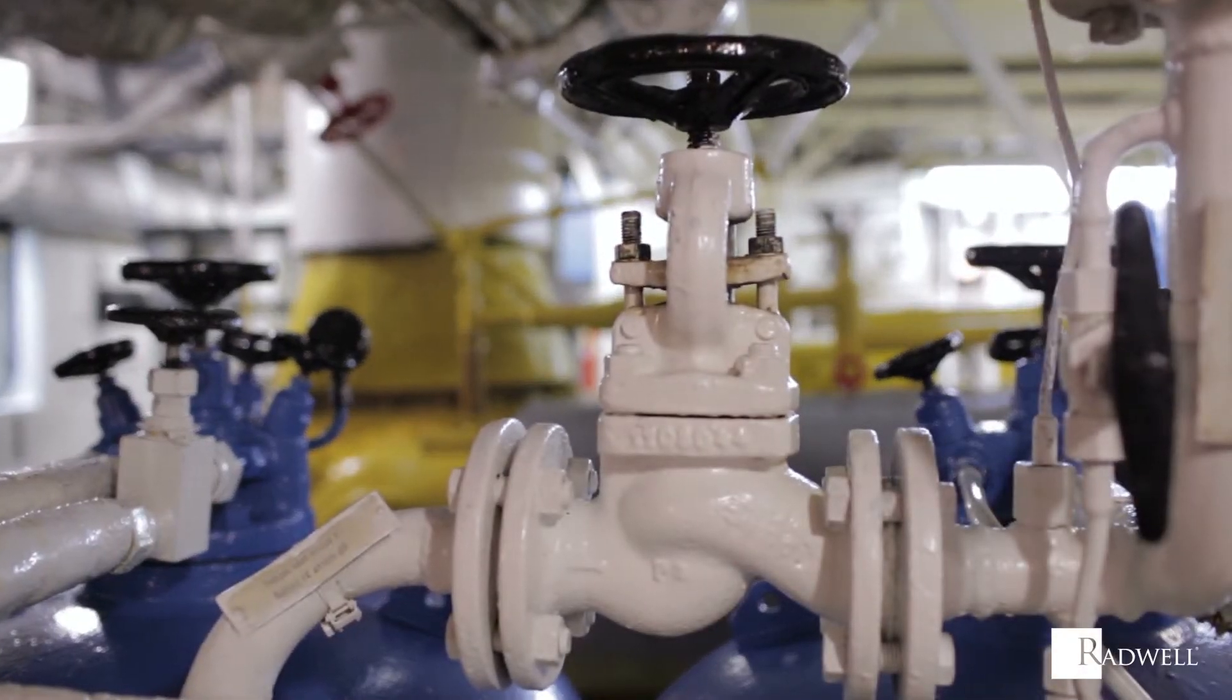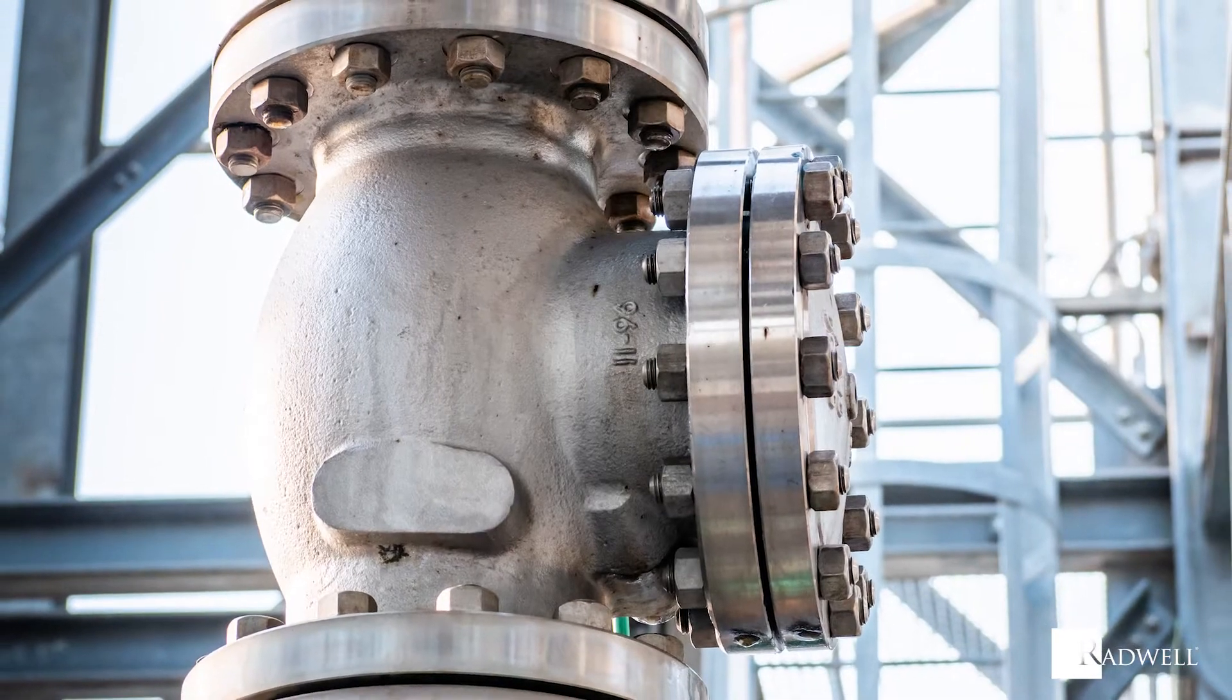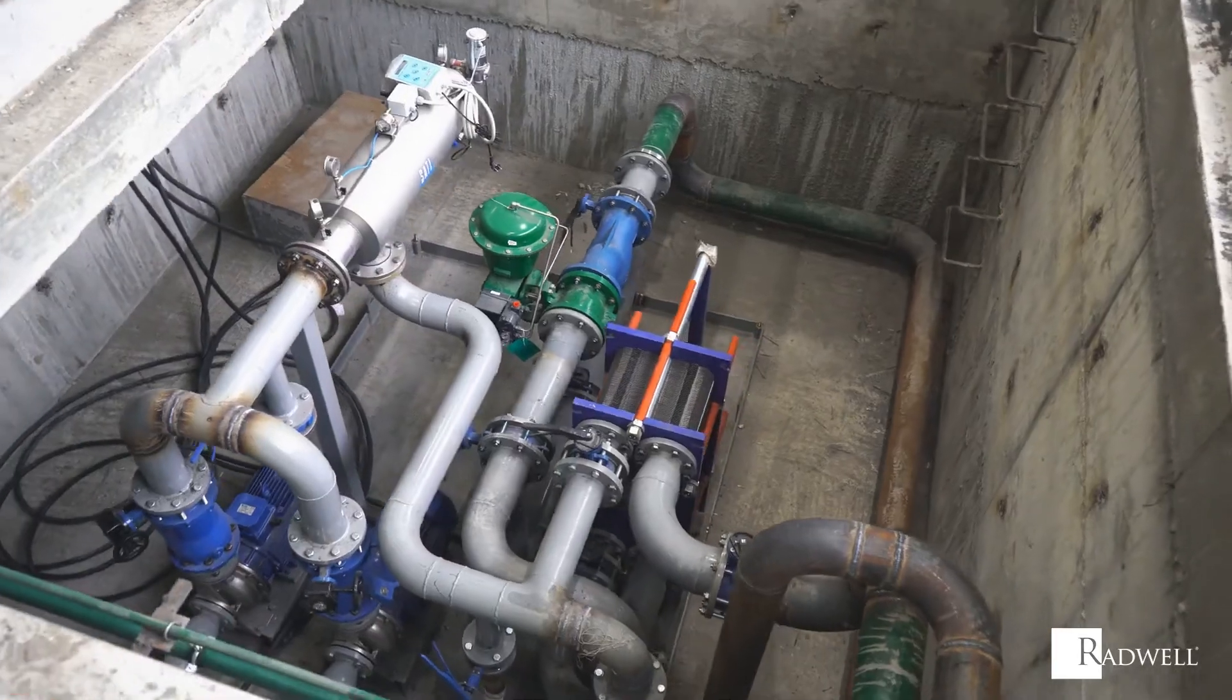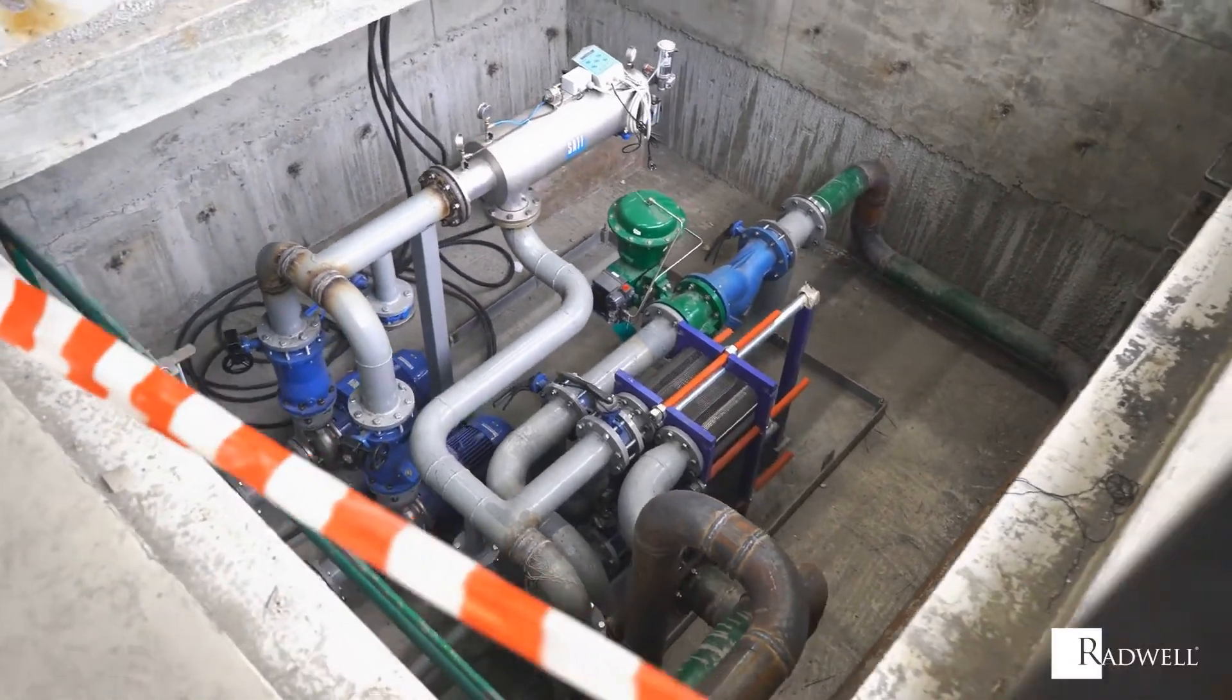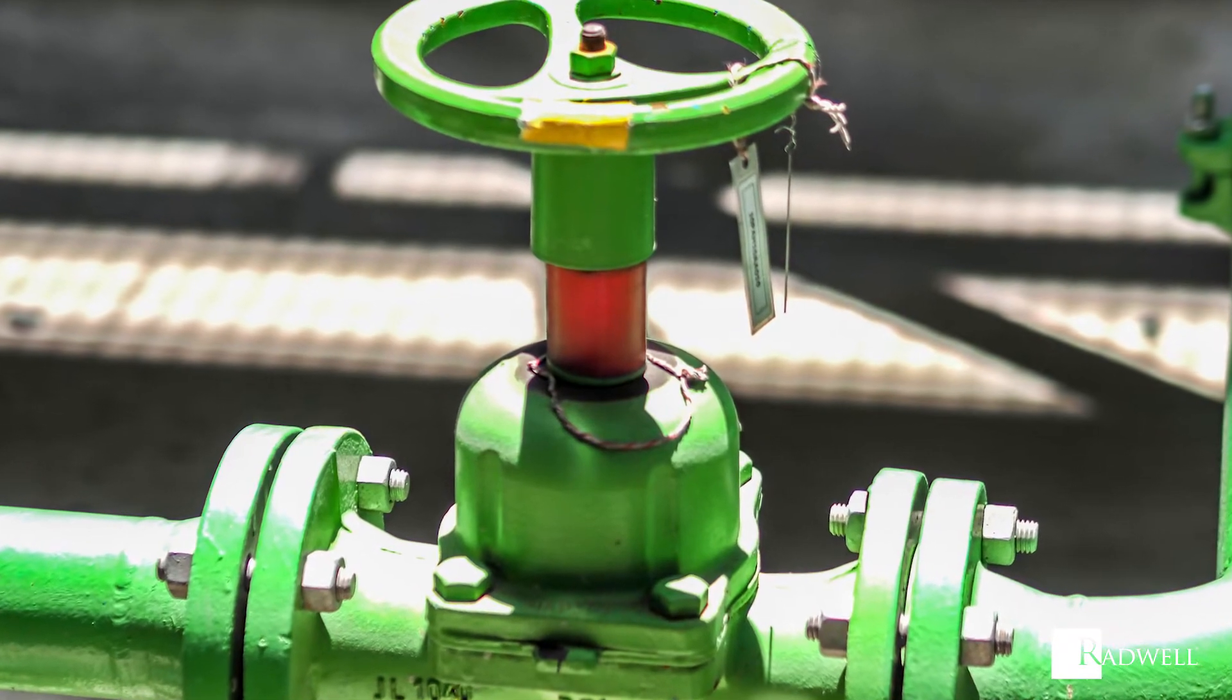A globe valve is a linear motion valve and its main purpose is to stop, start, and regulate fluid flow. Globe valves are capable of throttling flow without stopping. Do you know how they work? In this episode of Radwell's How It Works series, we're going to explore how globe valves operate.